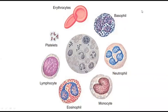White blood cells are involved in the immune system, playing a role in our immunity, while red blood cells act as oxygen carriers in our body. The question arises: where do these cells come from, and what is the actual location of their production?